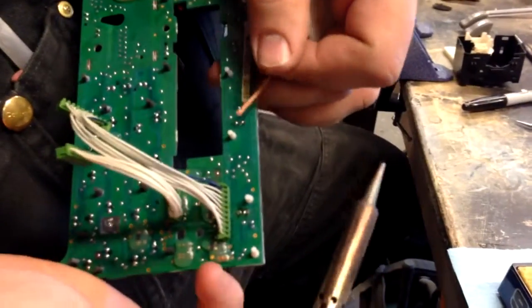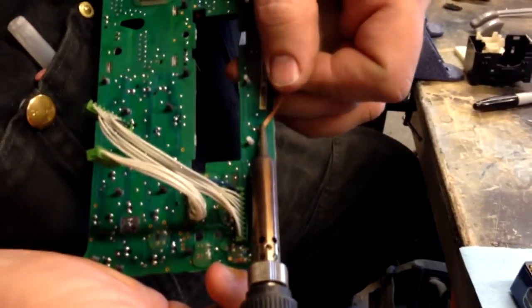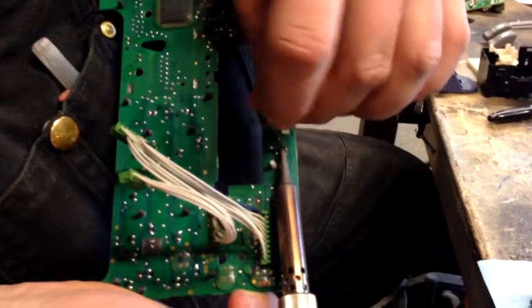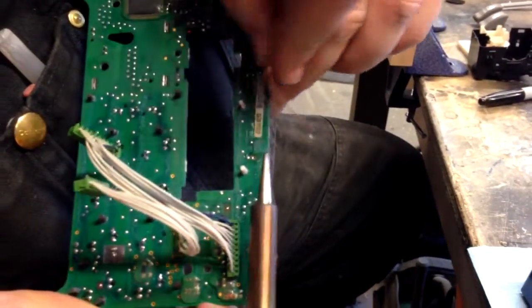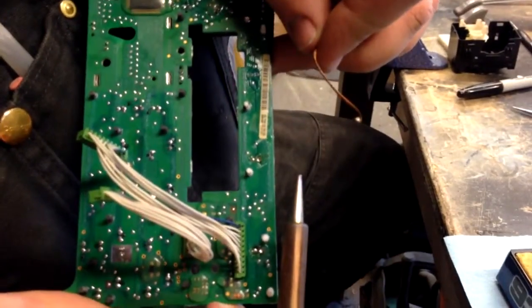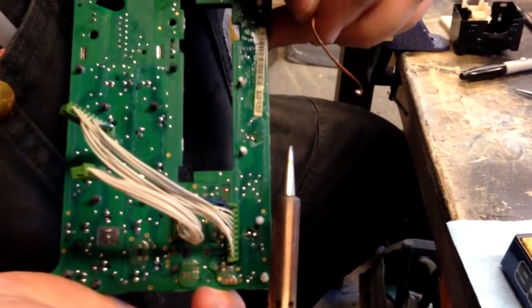Then I come in with the braid, or solder wick, heat it up. And kind of wrap it around the tip. Solder follows the heat. Now you can see you've got a nice clean hole there, ready for the next bulb to go in.